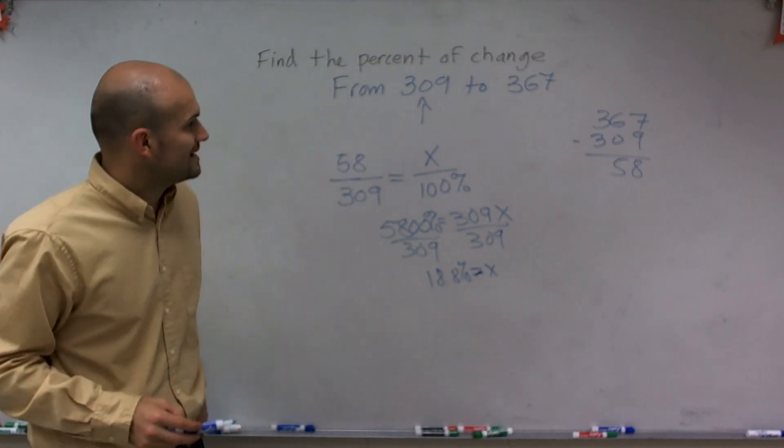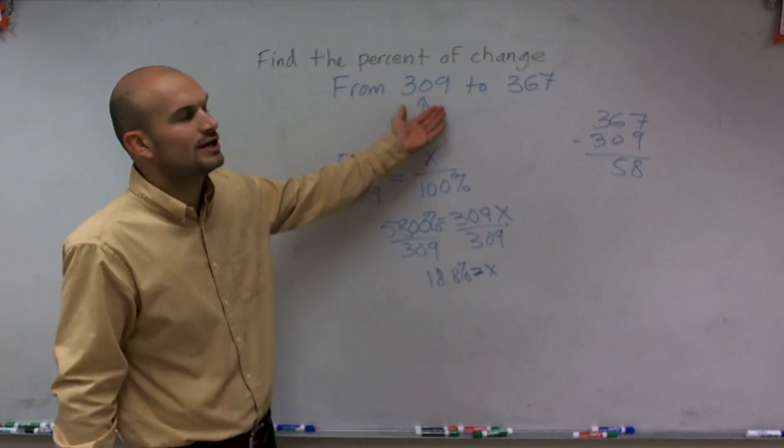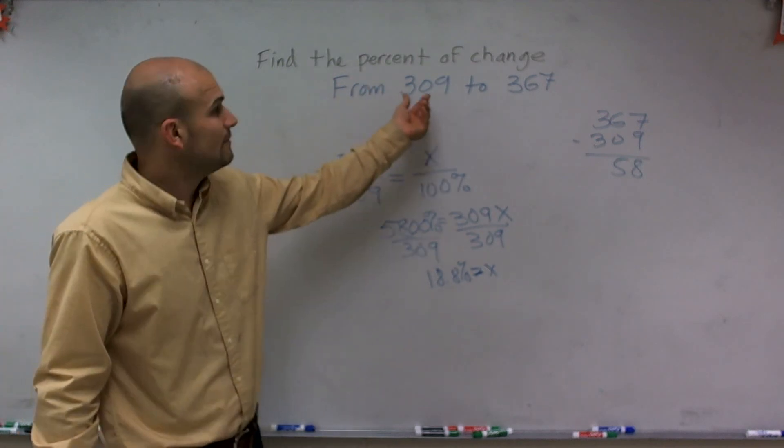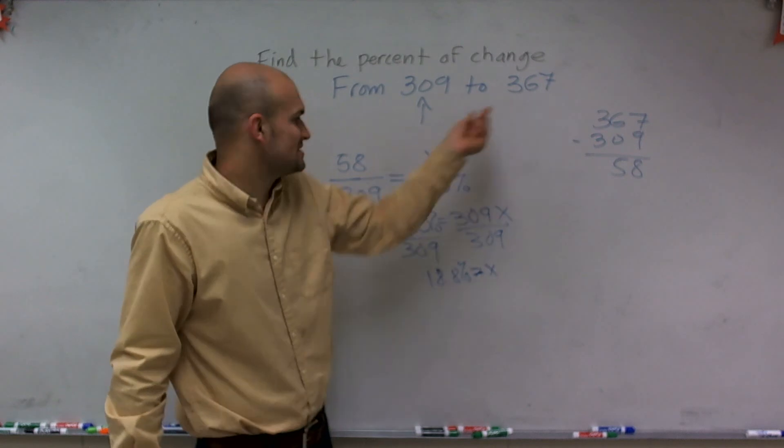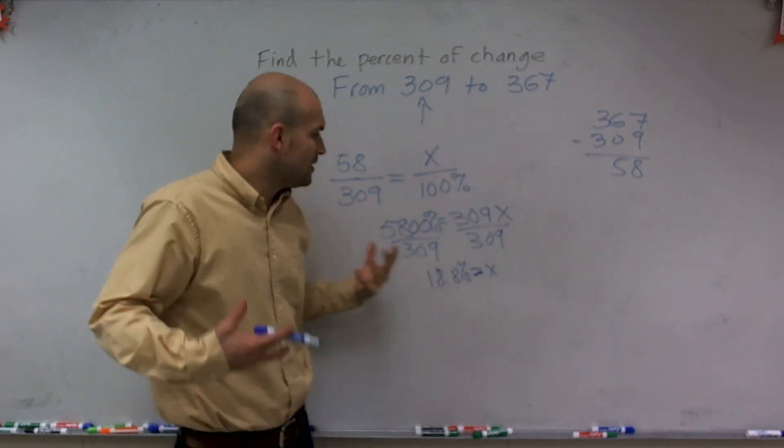And then the last thing we're going to look at is, is that going to be a percent of increase or decrease? Well, we look at what our initial starting point, what's our whole, and we notice that we increased 18.8% or 58 units to 367.